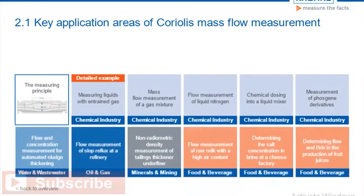Coriolis flow meters can measure both mass flow and density. They are used in a wide range of application areas in the process industry. Please click on the tiles to learn more about the key application areas of Coriolis mass flow meters. To recap the functional principle of Coriolis mass flow meters, click on the tile for the measuring principle. When you feel ready for a quick knowledge check, click Take Quiz.